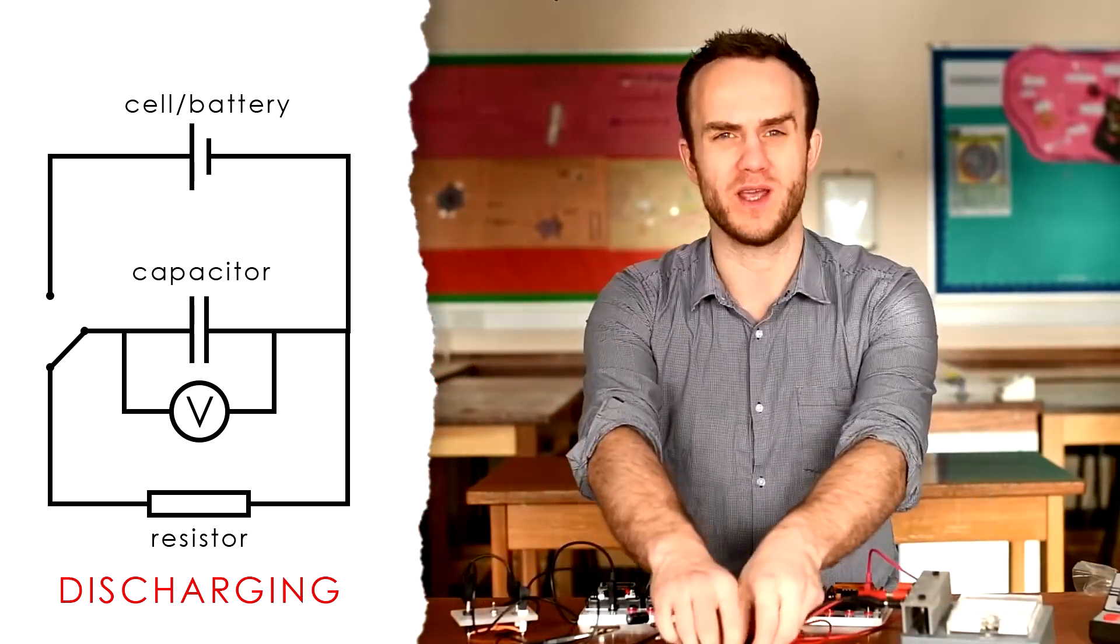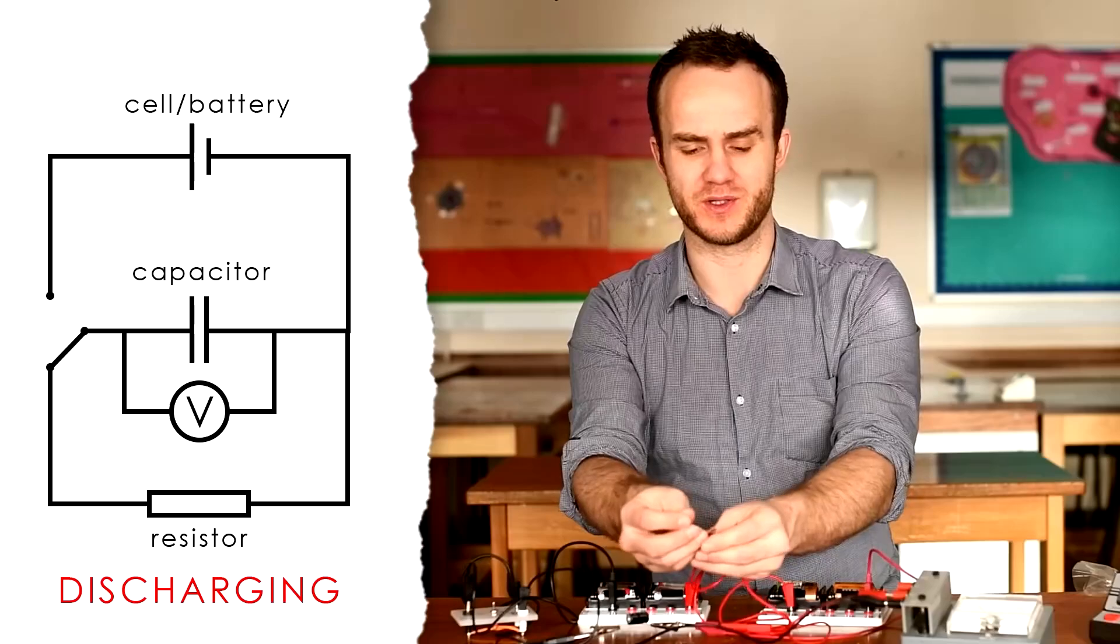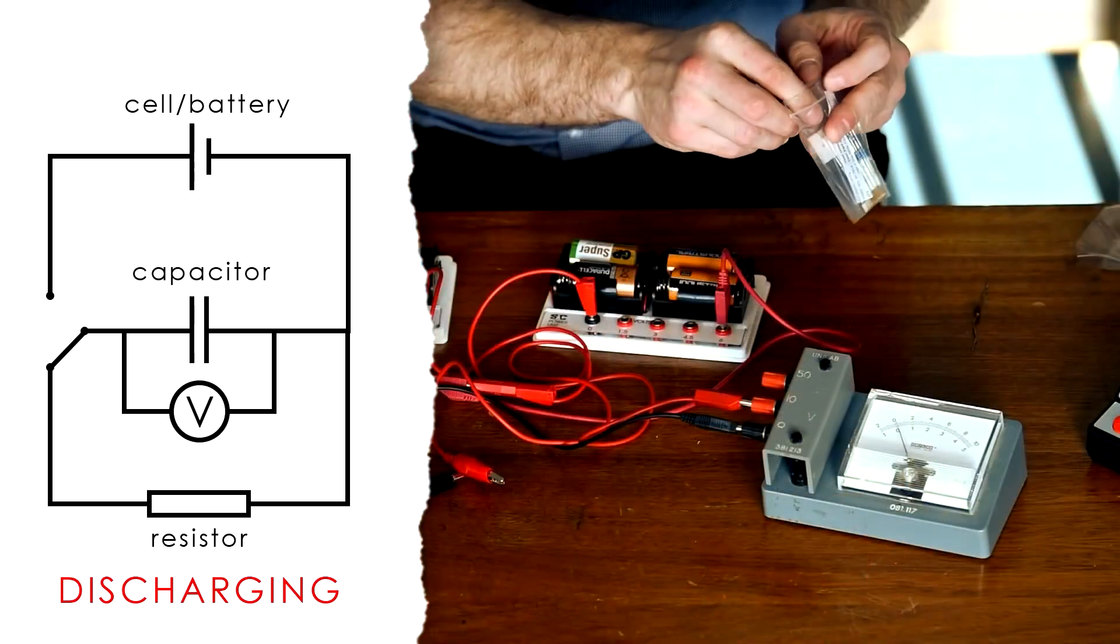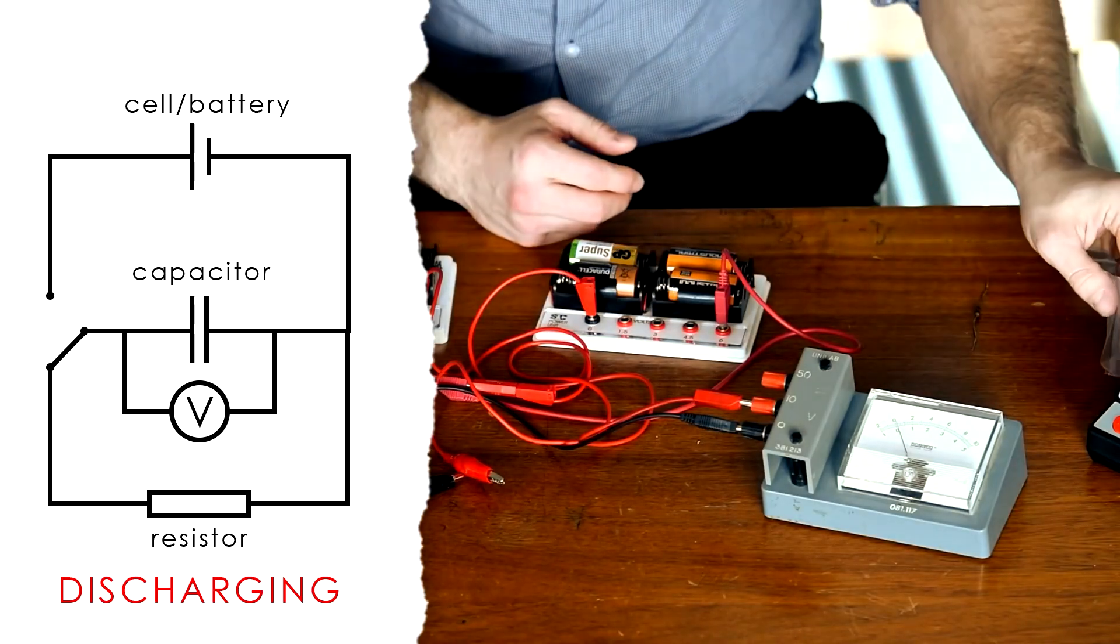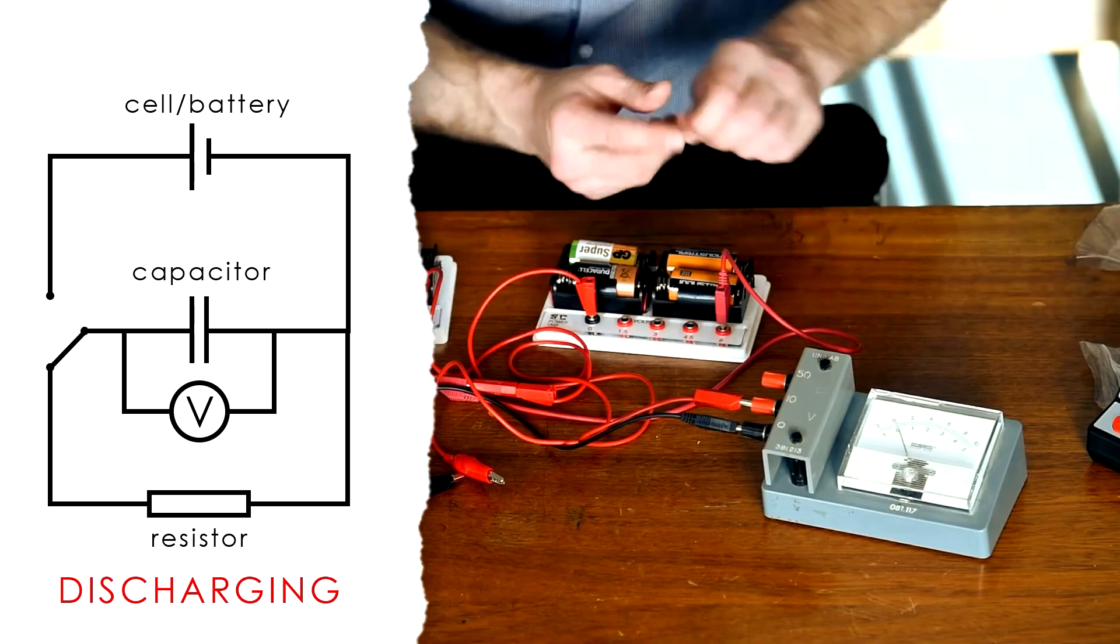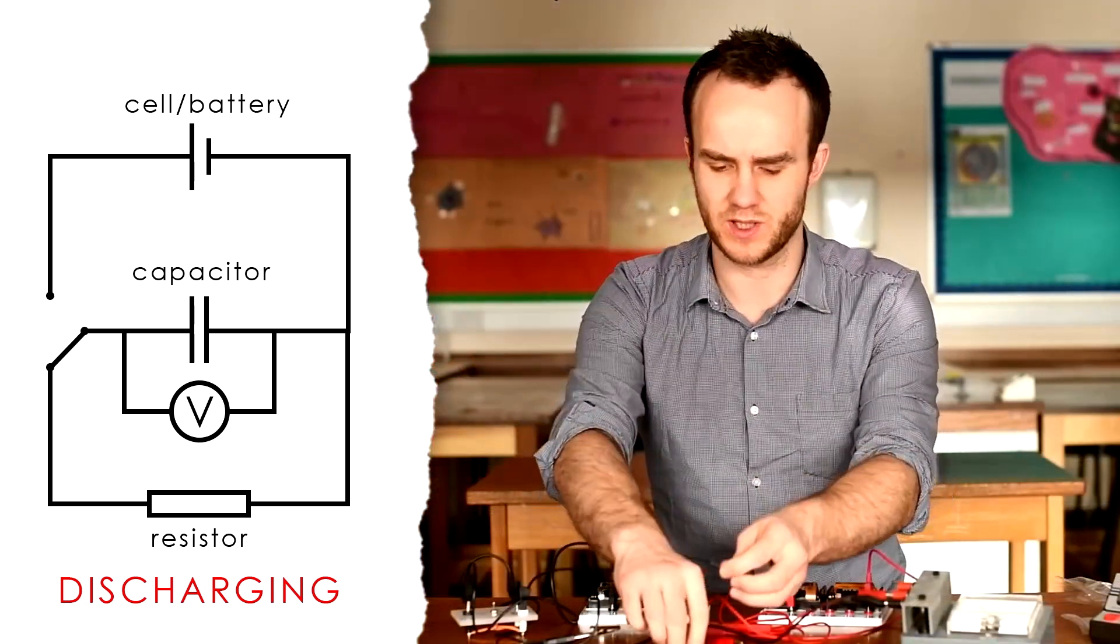So we want a higher resistance in order to make sure that it discharges more slowly. And so you might have to do this, try out different resistors until you get a fairly long time for you to take readings over. What about 1000 ohms, one kilo ohm?